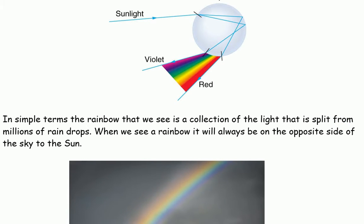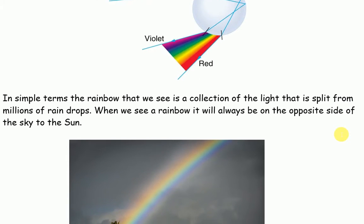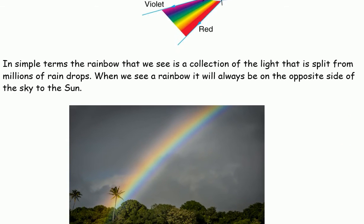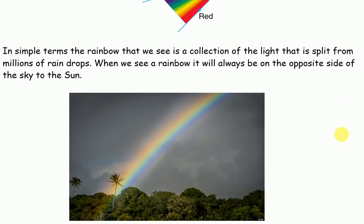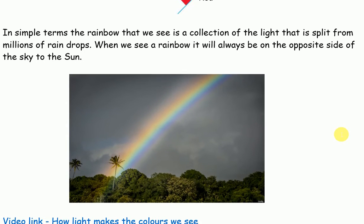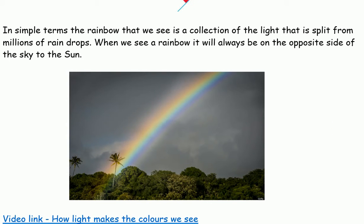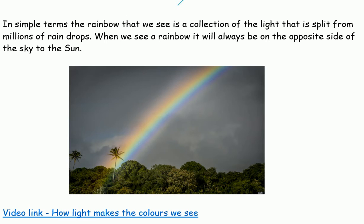In simple terms, the rainbow that we see is a collection of the light that is split from millions of drops of rain. When we see a rainbow, it will always be on the opposite side of the sky to the sun.